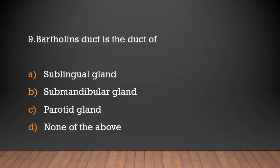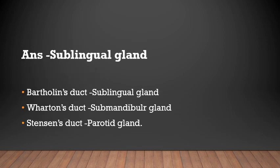Bartholin's duct is the duct of which gland — sublingual gland, submandibular gland, parotid gland, or none of the above? The answer is sublingual gland. Bartholin's duct is the duct of the sublingual gland; Wharton's duct is the duct of the submandibular gland; and Stensen's duct is the duct of the parotid gland.